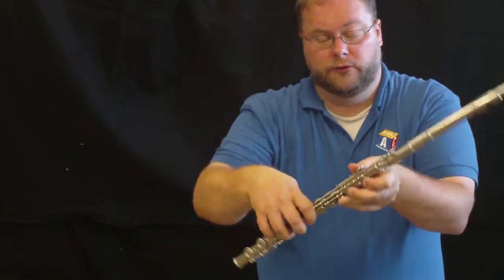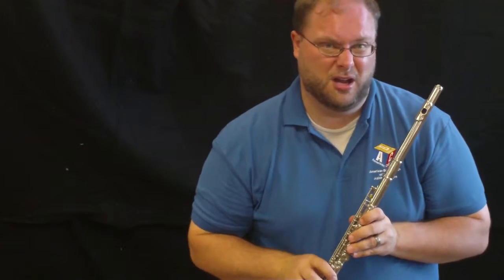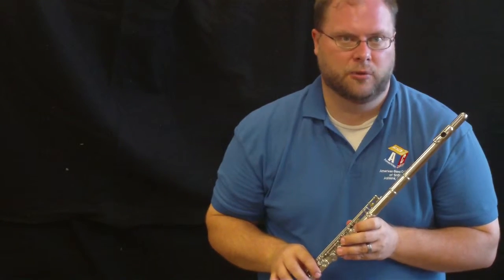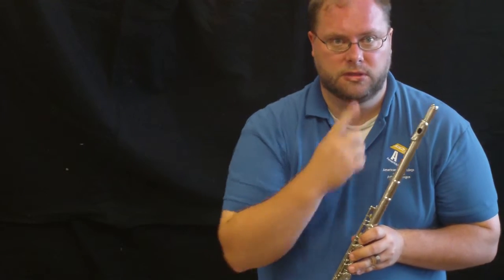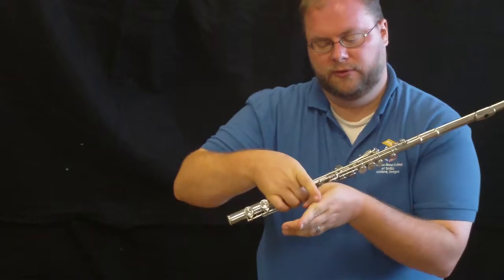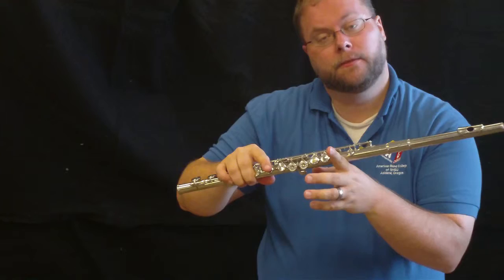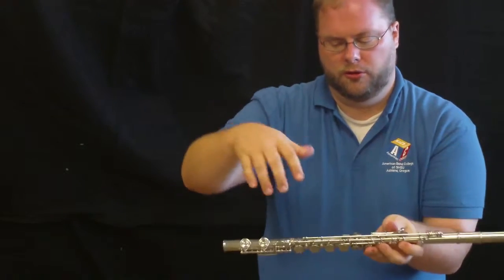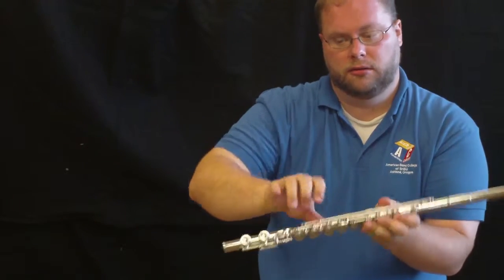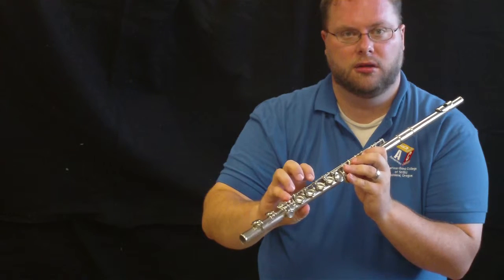All right. So now that we got our fingers where they need to go, we need to know how to hold it up to our face. On flute, there's four balance points. Where it touches your lip, how we've practiced with our head joint. Where the flute touches your hand on your left hand, right there. Your thumb on your right hand, and your pinky on your right hand.